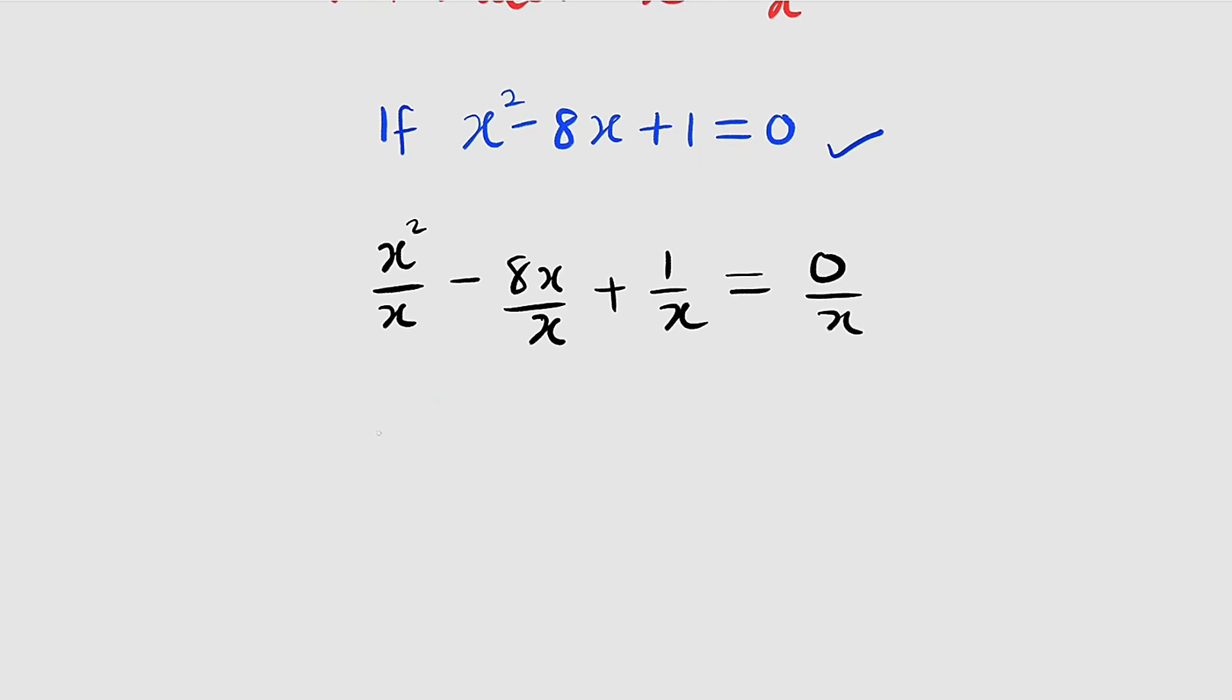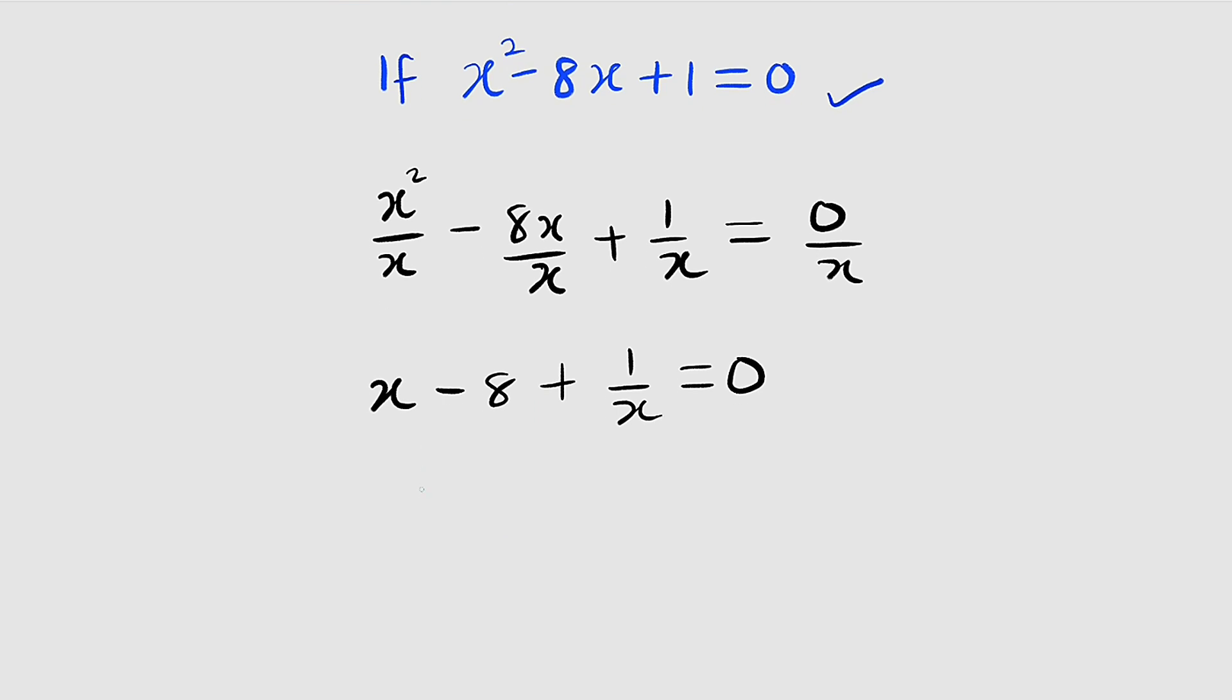To the left hand side, we have x - 8 + 1/x = 0. Now let us take negative 8 to the right. We have x + 1/x = 8.